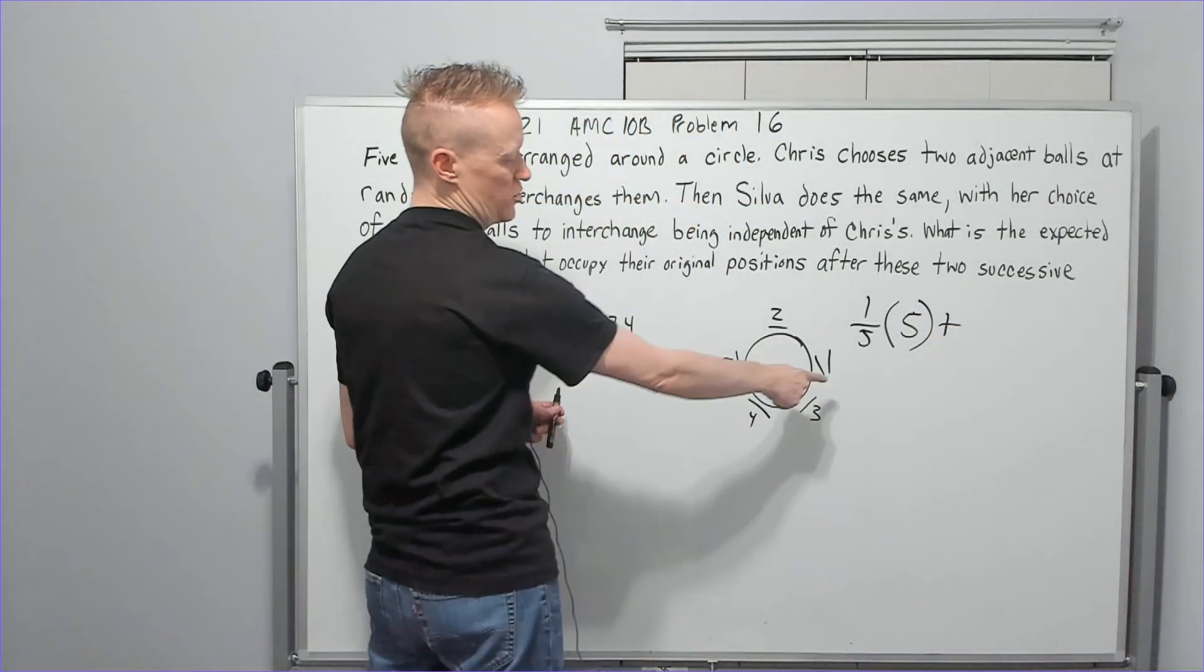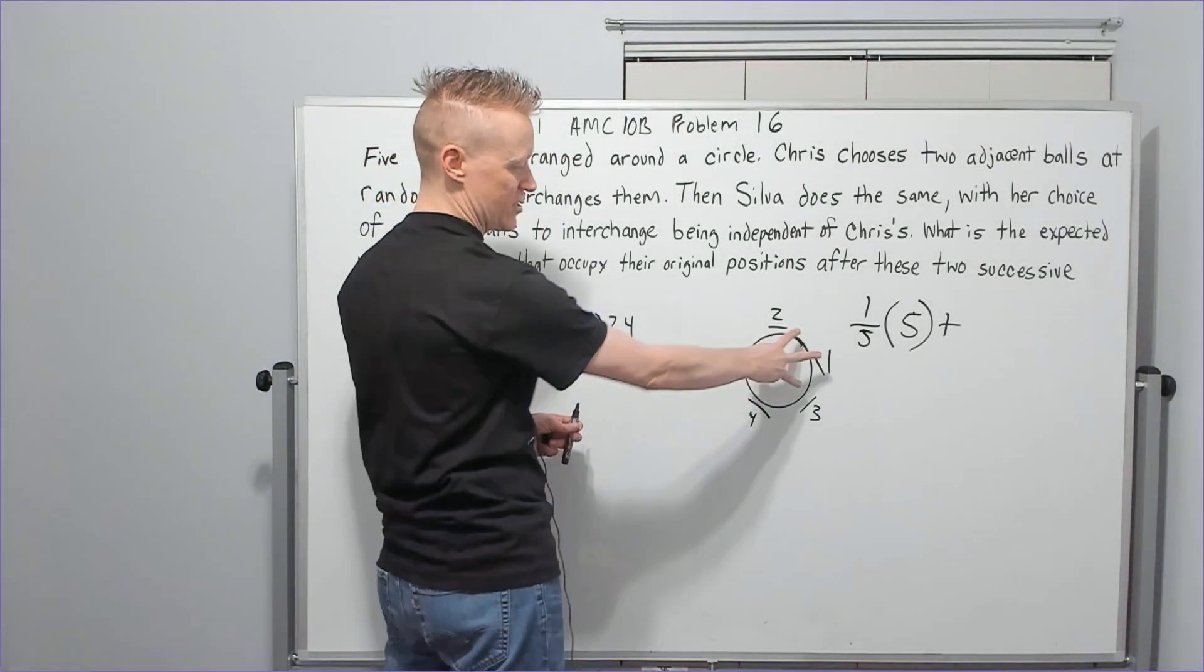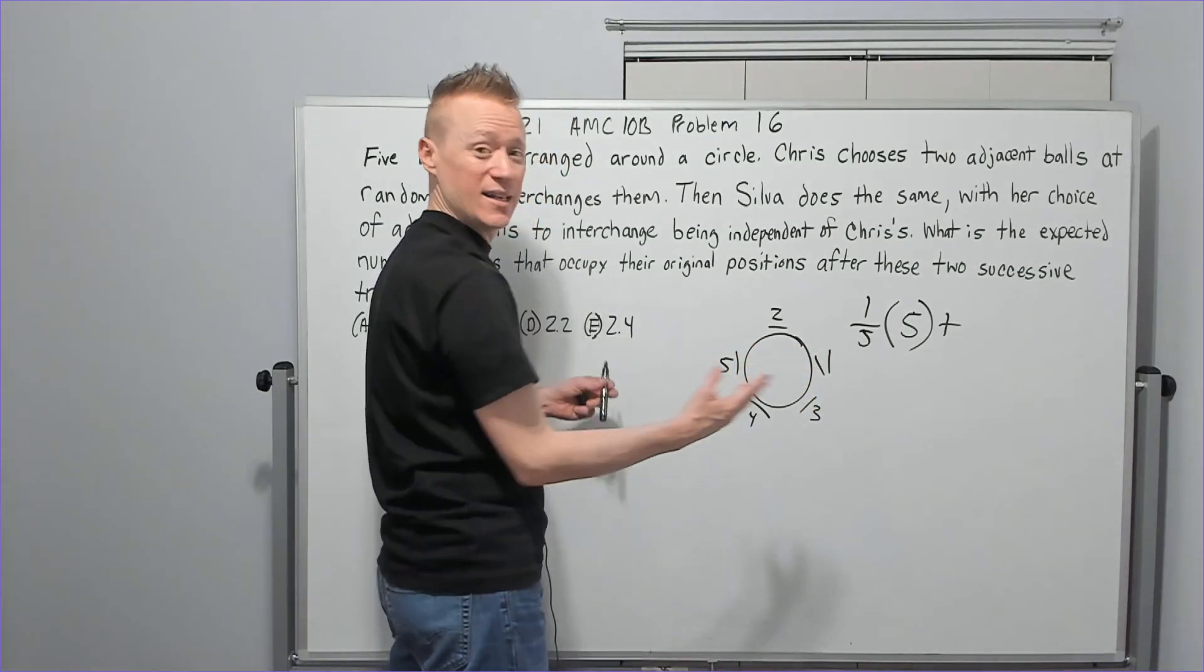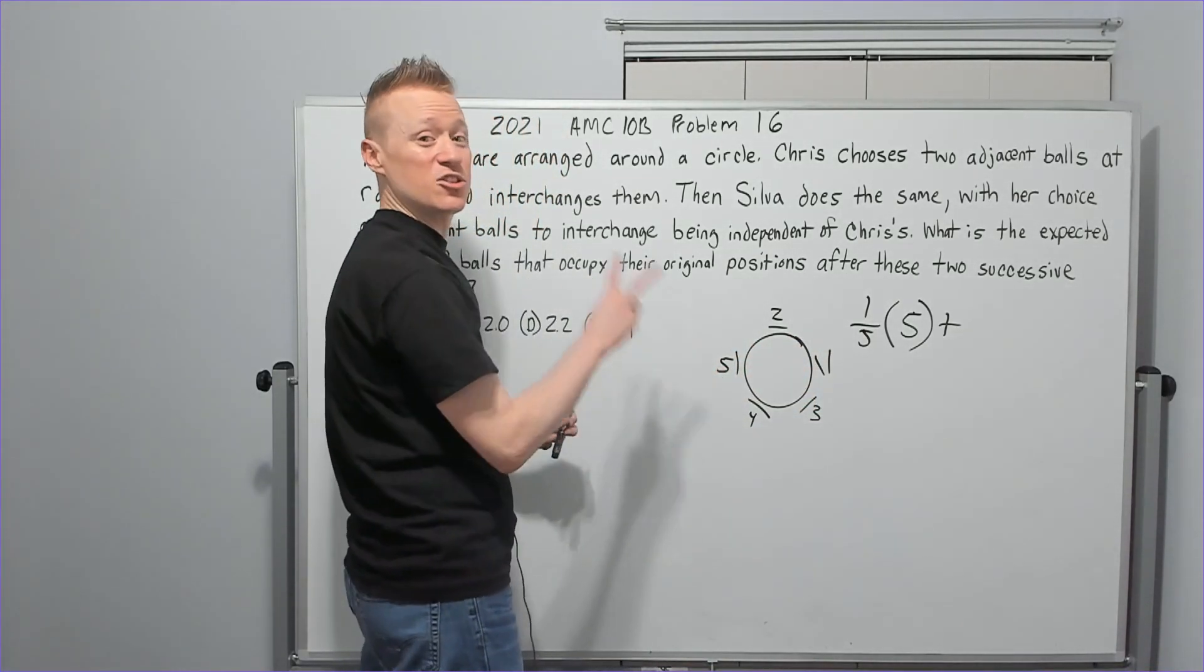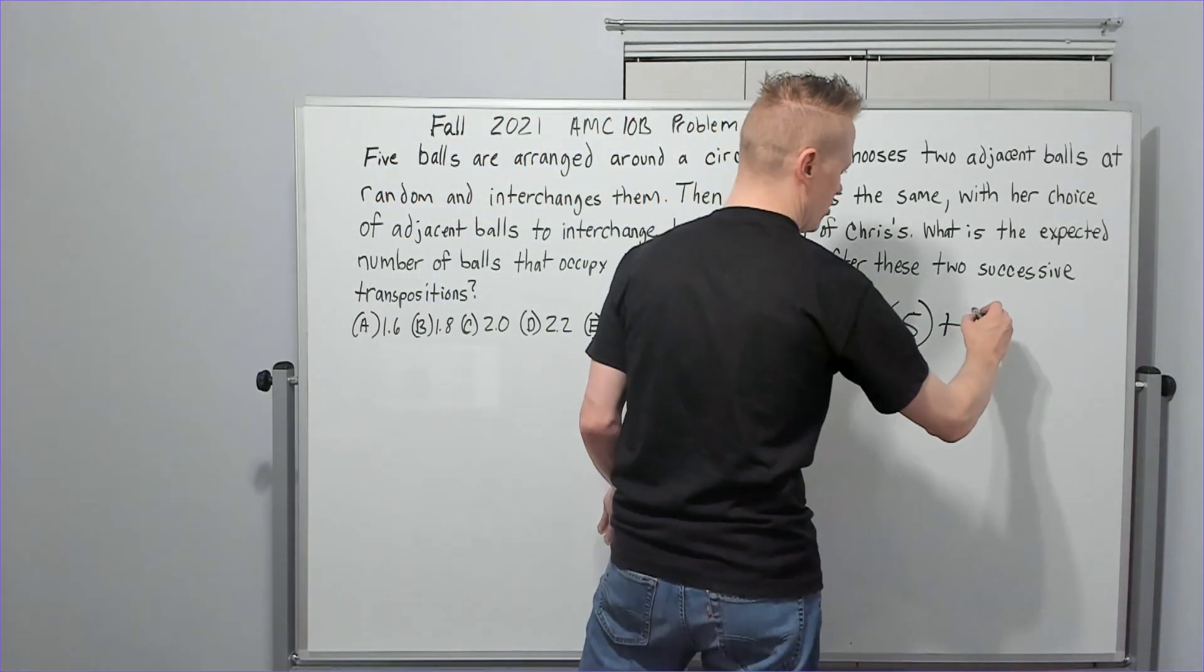Next, what if she had chosen one and three? Then how many balls would be out of place? All three of these would, because the one would be here now still not back, and three's over there, it's out of place, which would mean two of them are in place. So we could do two fifths.